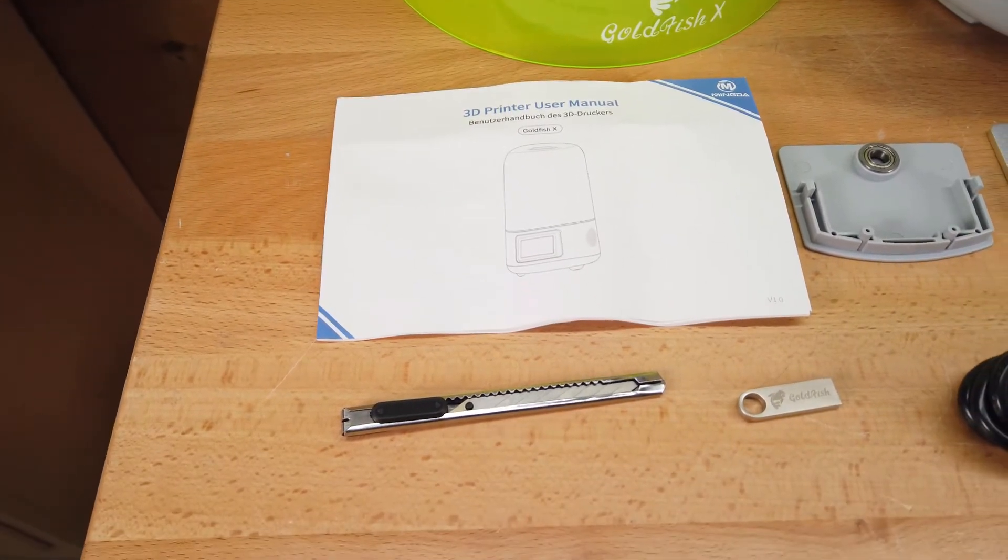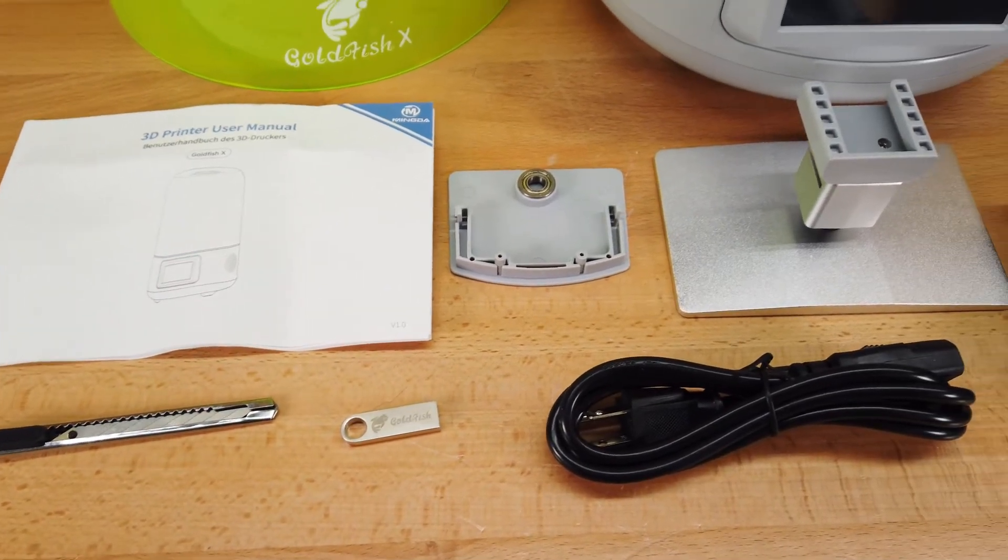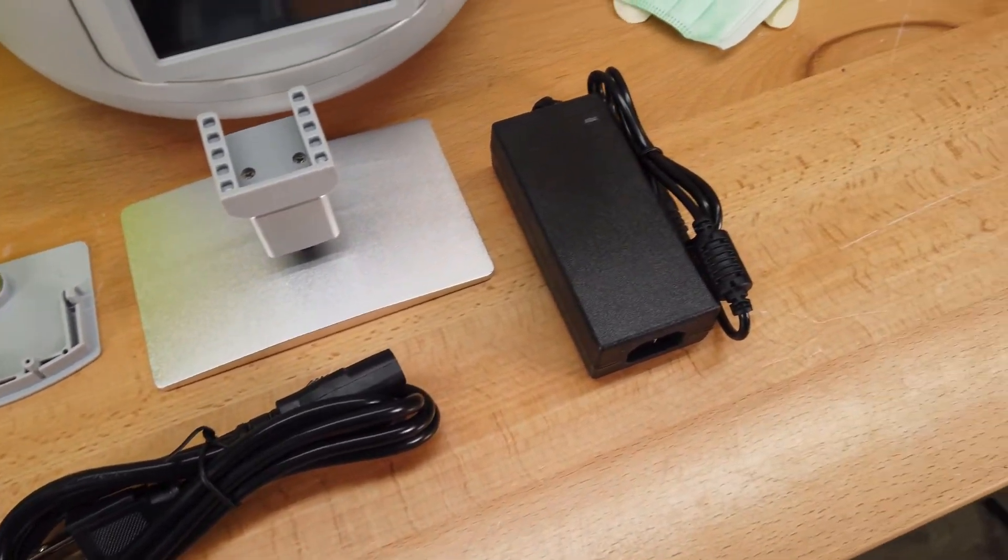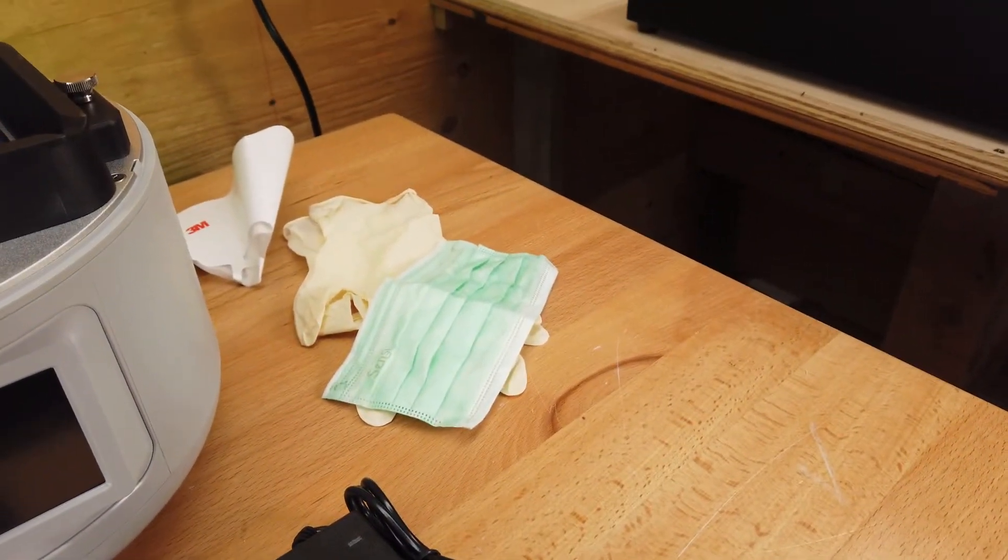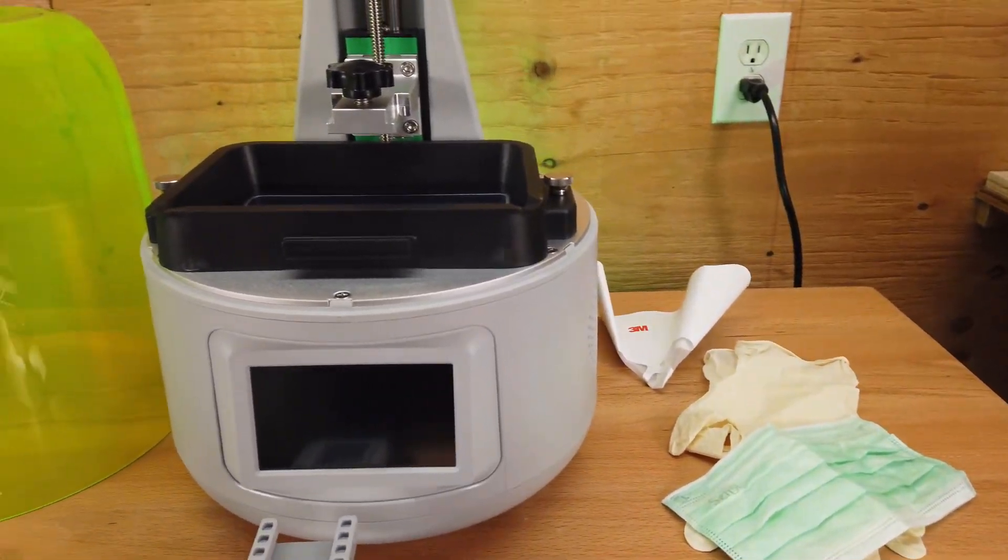Here's everything in the box. There's a user's manual, some razor blades, a USB drive, the top cover for the Z-axis with a bearing, the power supply, and the build plate. There's also a pair of latex gloves and a mask, along with one strainer for resin. And then there's the rest of the printer with a vat and the acrylic enclosure.